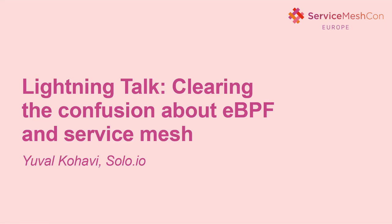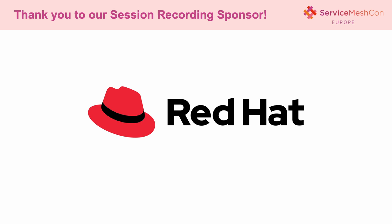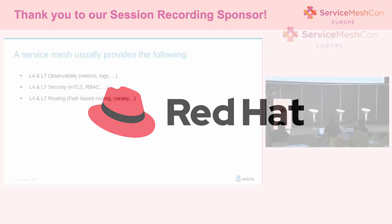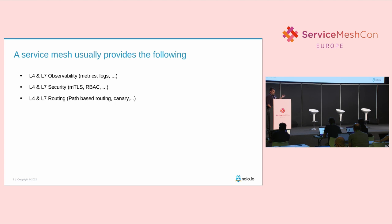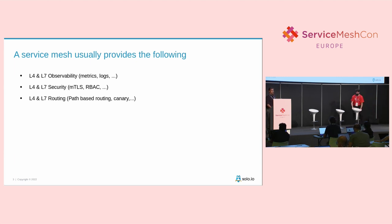Let's talk about Service Mesh and eBPF. When we talk about Service Mesh and the things it provides and the abstractions it creates, we talk about observability, about security, about routing — L4 and most importantly L7.